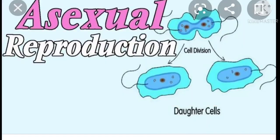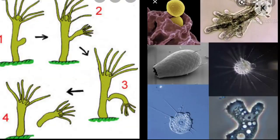Asexual reproduction — in this type, one organism divides into two or more offspring. This is called asexual reproduction. The offspring produced are identical to the parent organism. This type of reproduction occurs in microorganisms like hydra and amoeba. In asexual reproduction, the offspring and parent organisms are identical.